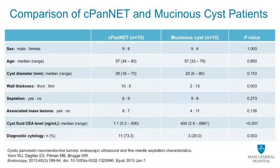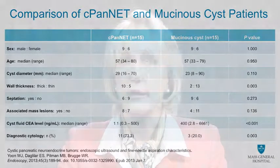In another study from MGH focusing on EUS features and cyst fluid analysis, it was shown that almost all cystic neuroendocrine tumors have a low CEA level, less than 6% in most cases, compared to a matched cohort of mucinous cysts where the typical CEA level is greater than 192 nanograms per ml. Although not emphasized in that study, amylase levels were also usually low, and compared to IPMNs, for example, amylase levels are usually always elevated.